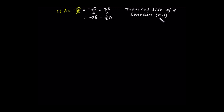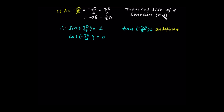So sine, cosine, and tangent of negative 7π/2: the terminal side contains the point (0, 1) on the positive y-axis. Sine is the y value = 1. Cosine is the x value = 0. Tangent is y over x = 1 over 0, which is undefined.